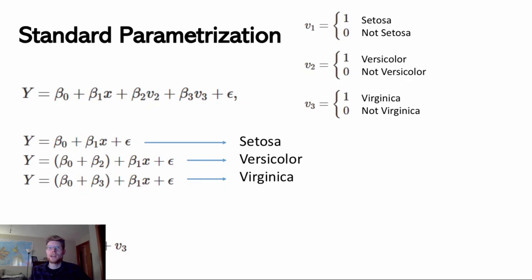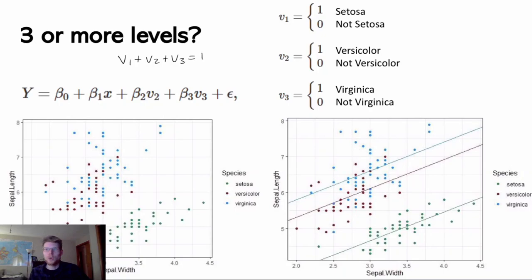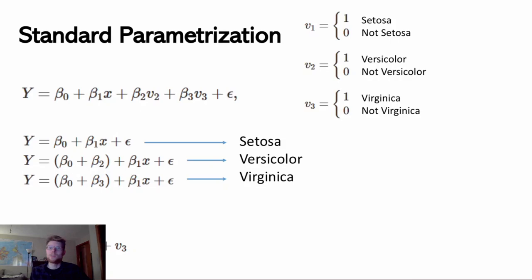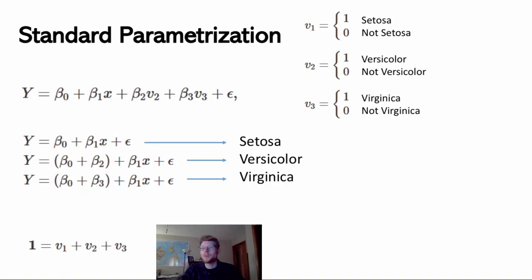Another way to think about this: we're fitting three different lines, one for each species, by adjusting the intercept. If this is an additive model with no interaction between sepal width and species, all we're doing is changing the intercept depending on which species is true. We have a base level category, and then we adjust the intercept by the coefficient on the appropriate dummy variable. Behind my head, I'd already written that 1 equals V1 plus V2 plus V3.